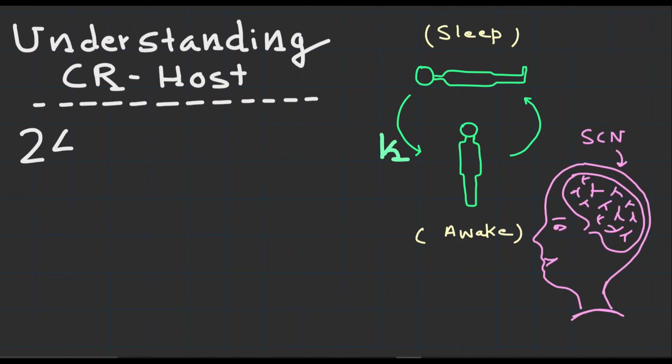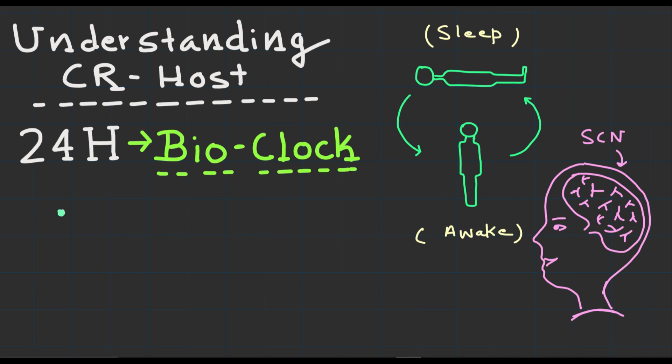Before we understand the details let's start with the basics. Circadian rhythms are the 24-hour biological cycles that govern numerous processes in our body including sleep-wake cycle, hormone production, body temperature and metabolism.